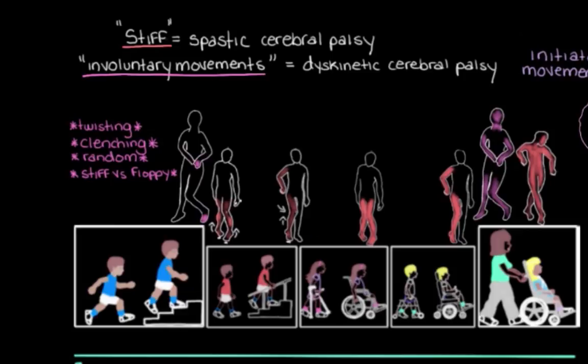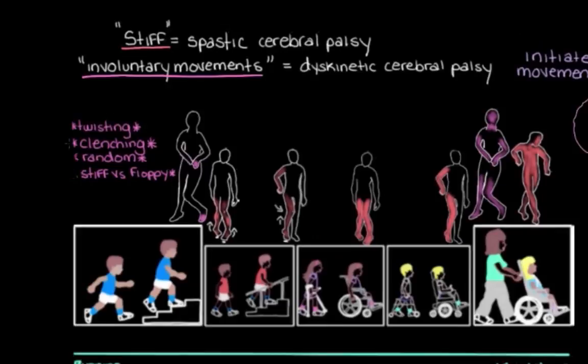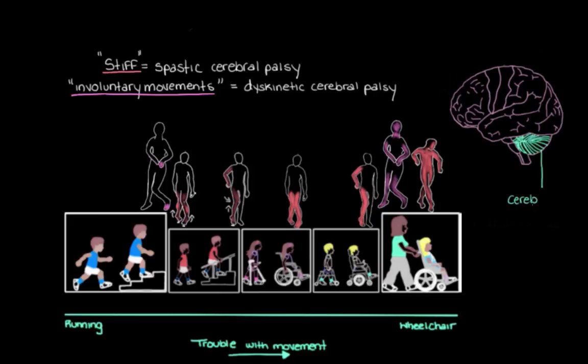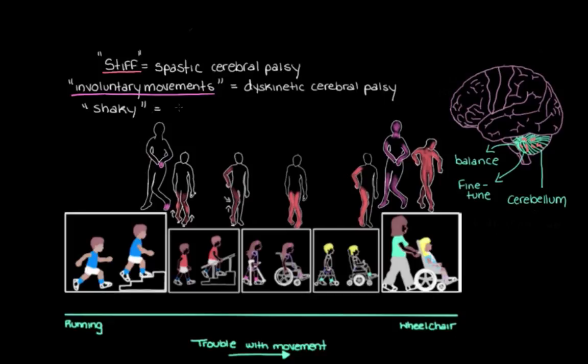That covers what happens when the basal ganglia or extrapyramidal tracts are impaired, and where people with dyskinetic cerebral palsy might land on the severity spectrum. The last movement center is the cerebellum, which we can think of as the balance center of the brain — it helps us fine-tune the movements we want to make. If the cerebellum is damaged or impaired, we end up seeing unsteady, shaky movements. This is called ataxic cerebral palsy: 'a' meaning without and 'taxic' meaning order — without order.